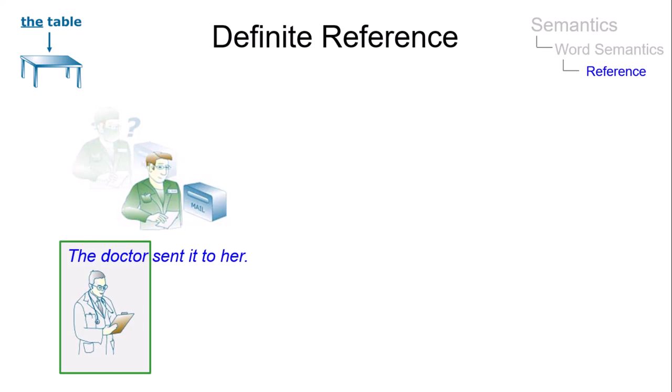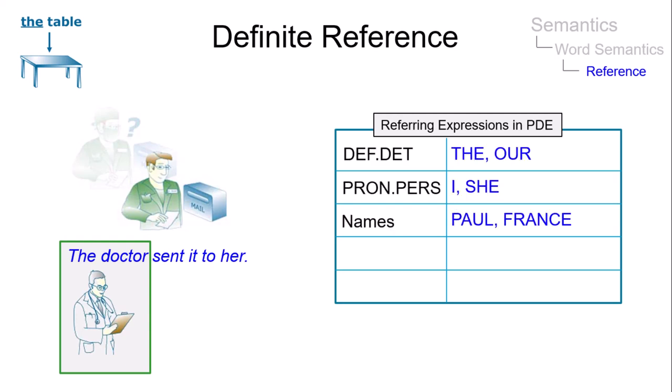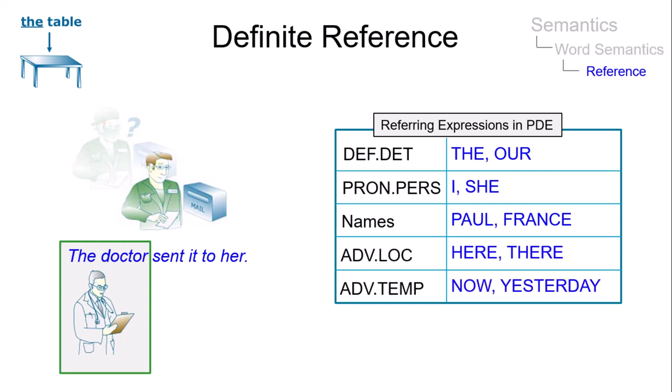The set of definite referring expressions in present-day English includes definite determiners, personal pronouns, proper names, and certain locative and temporal adverbs.